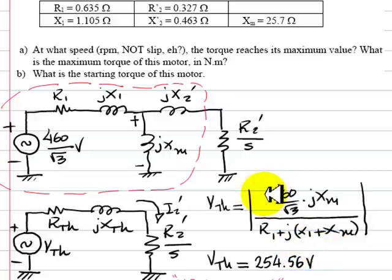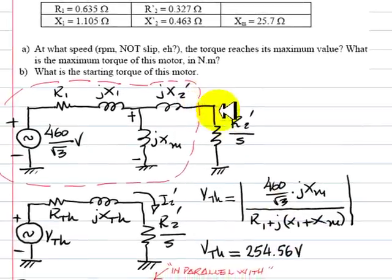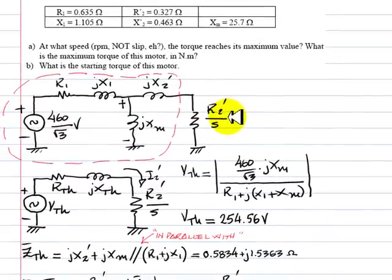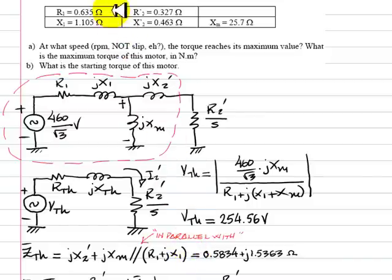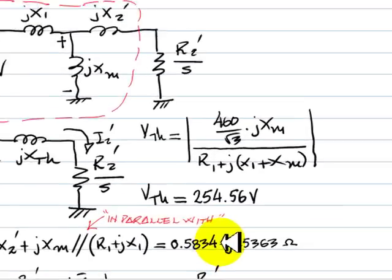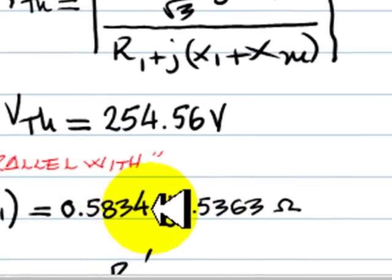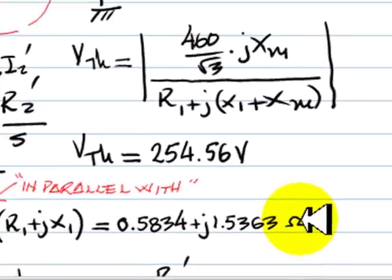Now let's find the Thevenin impedance. As seen from this resistor's point of view, the Thevenin impedance is jX2' in series with the parallel combination of R1+jX1 and jXm. Using your calculator with the values given in the table, we determine the Thevenin impedance to be 0.5834 + j1.5363 ohms.